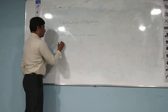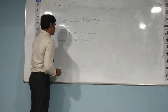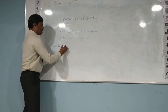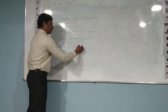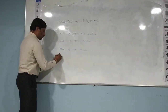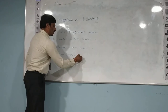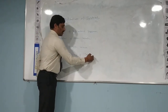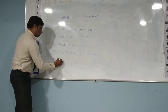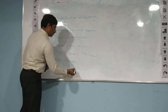Second classification: causal and non-causal systems. Third one is linear and non-linear systems. Fourth one is time invariant and time variant systems. The next one is stable and unstable systems.